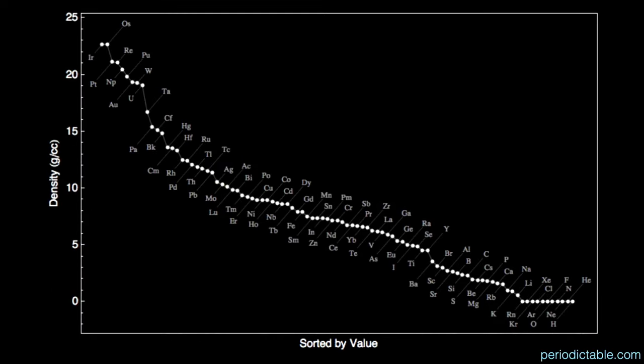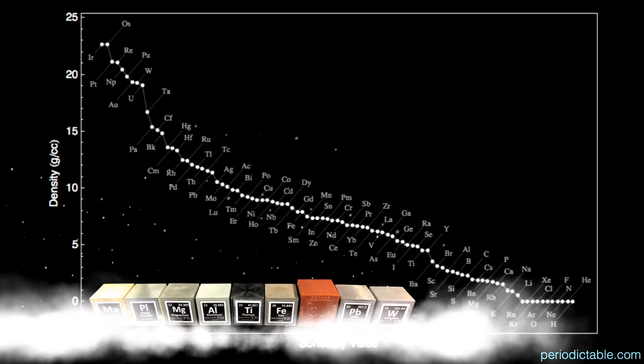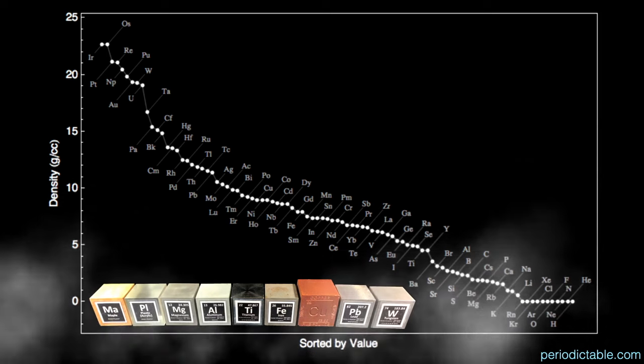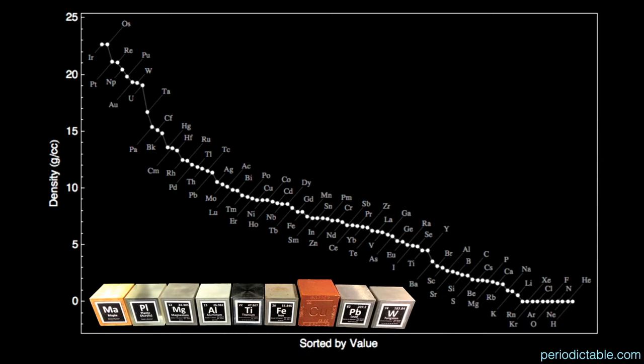Here is a graph of the elements from highest density to lowest density. Normally when I do this talk, we have a set of blocks so you can feel density for yourself, but we'll have to wait to do this until we're in person again. Our set of blocks have a wide range of densities, with the densest at tungsten, to lead, to copper, to iron, to titanium, to aluminum, and magnesium.